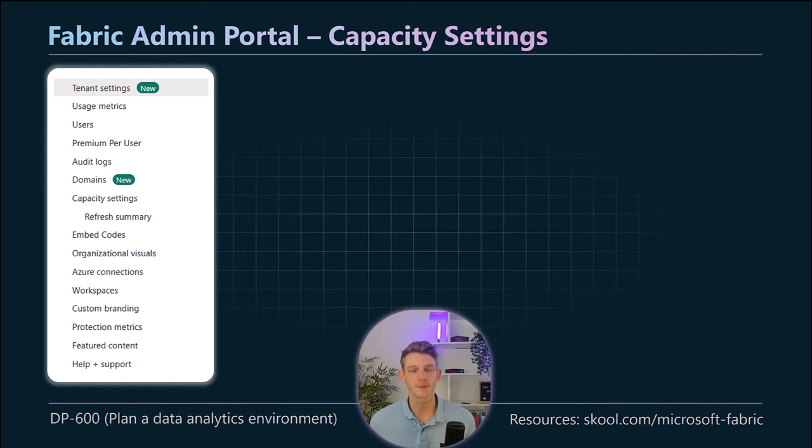Question five: you have data stored in tables in Snowflake. Which of the following cannot be used to bring the data into Fabric? A — use the data pipeline copy data activity; B — create a shortcut to the Snowflake tables from your lakehouse; C — use Dataflow Gen 2 with the Snowflake connector; D — use database mirroring to create a mirrored Snowflake database in Fabric. The answer is B. You can only shortcut to ADLS Gen 2, Amazon S3, or Google Cloud Storage — shortcuts are generally for files, not database tables. All other three options work: copy data activity, Dataflow Gen 2, and database mirroring — because Snowflake is one of the supported databases for database mirroring.